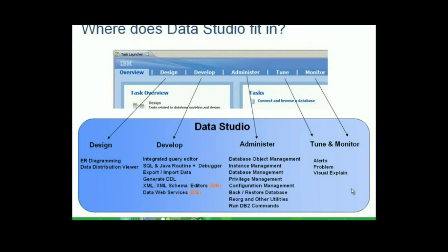Moving on to the next chart: where does Data Studio fit in the data lifecycle? We can see from this chart that Data Studio has partial functionality for every step in the lifecycle of data. At the top of the figure, you see the Task Launcher that you will find when you start Data Studio 2.2.1. Each tab represents a step in the lifecycle of data, from design, development and administration, to monitoring and tuning. The arrows point to descriptions with more information about what functionality is included in each tab. Note that some of the functionality listed is available only on the IDE package of Data Studio. The other products — like ODS, ODA, and IDA — provide complementary functionality for each step in the data lifecycle.